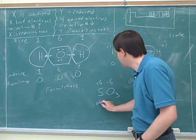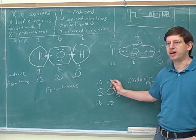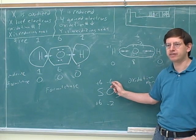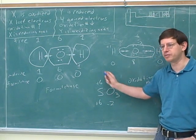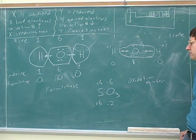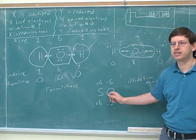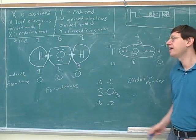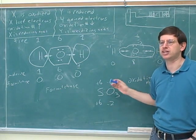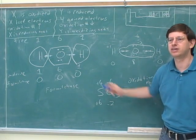Notice the notation: put the charges for the individual atoms below, and the charge for the group of atoms above. Each individual oxygen has a negative 2 charge, but with three oxygens, they have a negative 6 charge altogether. A useful technique is to start by assigning oxidation numbers to the most electronegative element — that's why we started with oxygen, not sulfur. Then we figure out the sulfur by process of elimination — whatever it must be to balance out the oxygens.